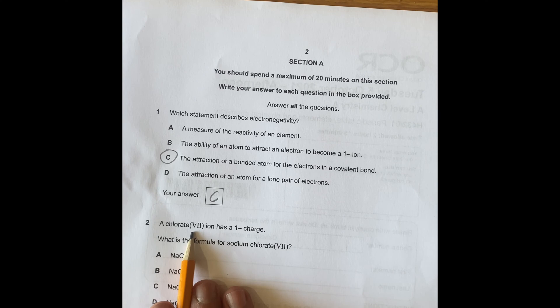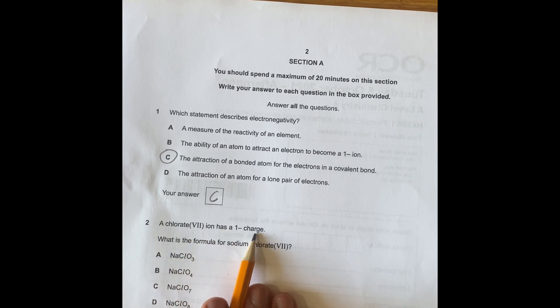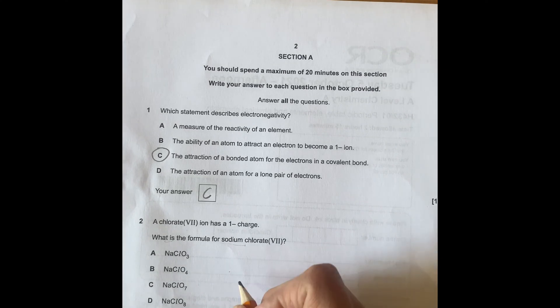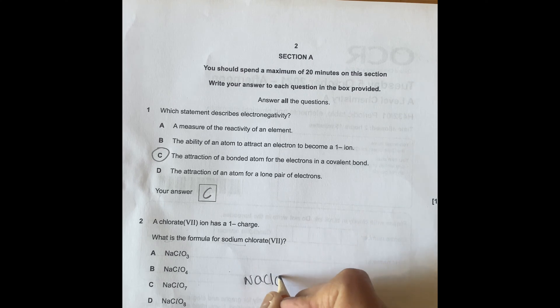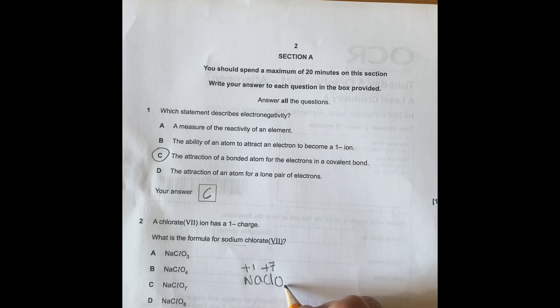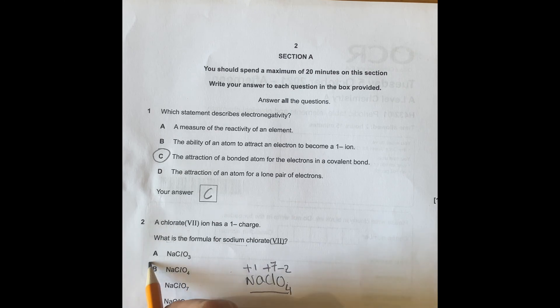Number two, a chlorate seven ion has a minus one charge, which is the formula of sodium chlorate. How you do that is very simple. You do sodium, Cl, O. So if it says it is 7, that means chlorine is plus 7. If chlorine is plus 7, then you have plus 1 for sodium, which is group 1. That means that you need 4 oxygens, because oxygen is minus 2. 4 times minus 2 is minus 8, and that's plus 8. So the formula has to be that, which is B.